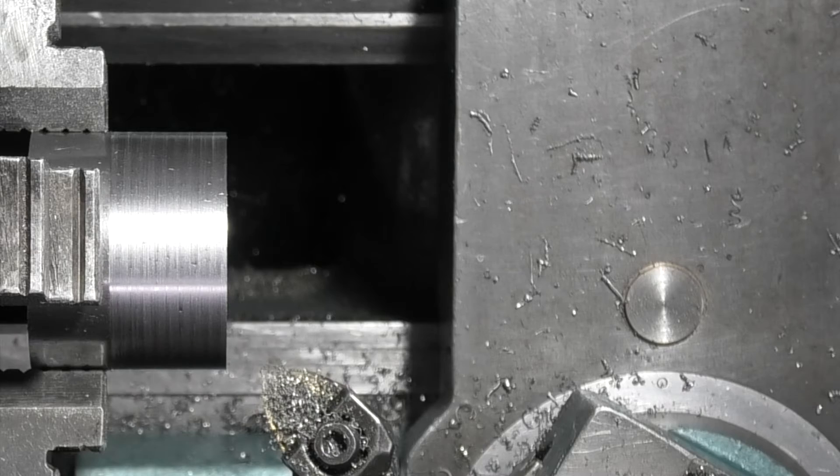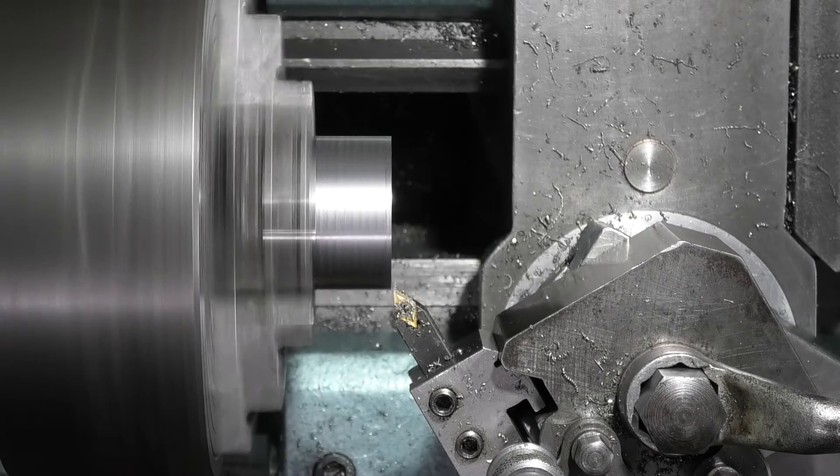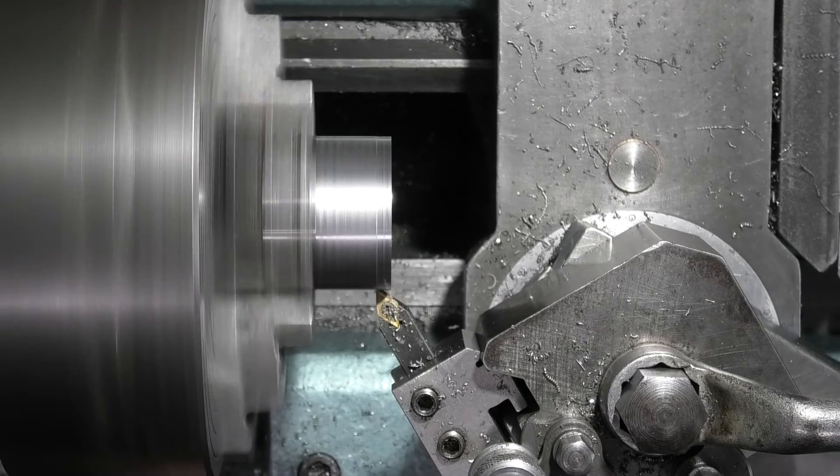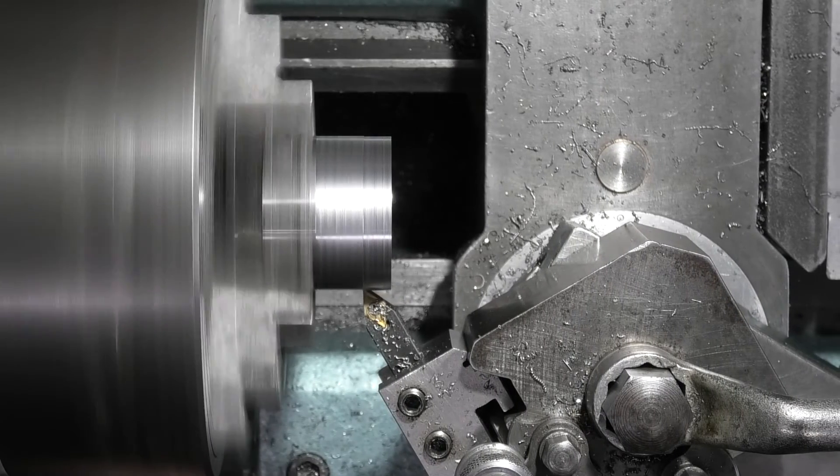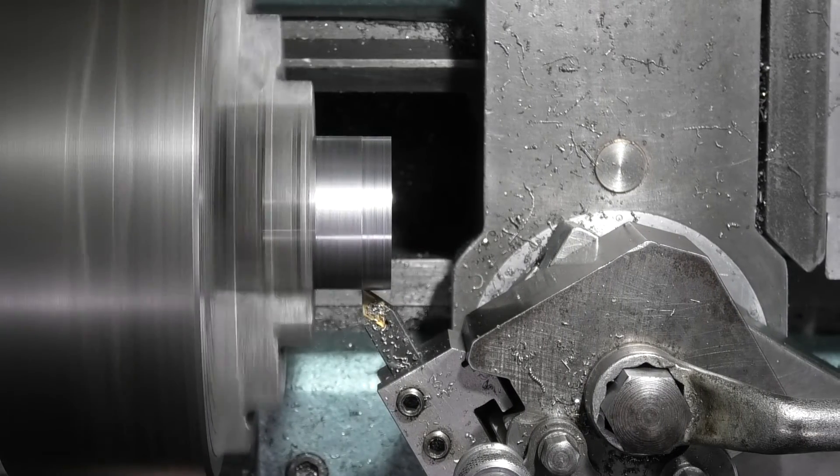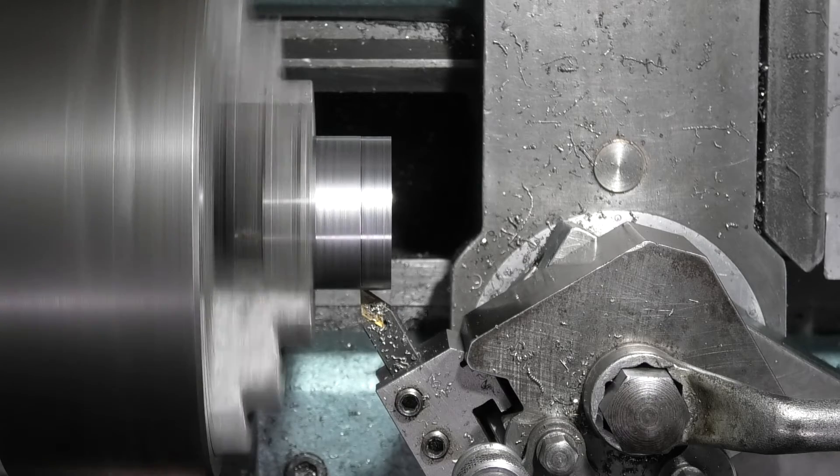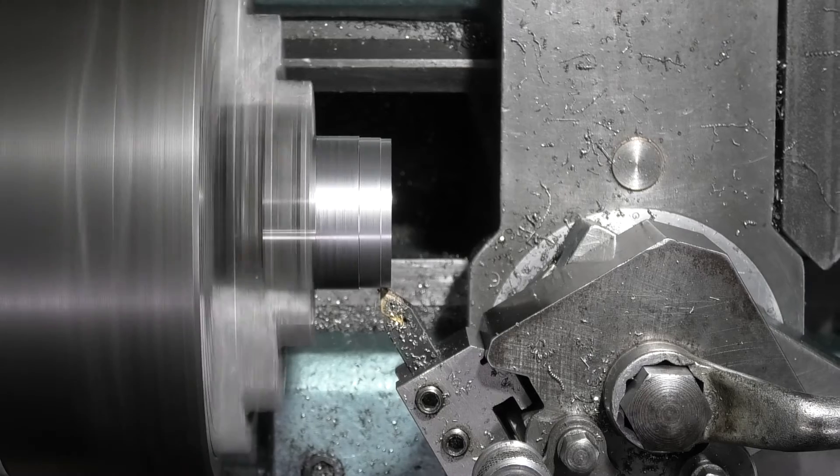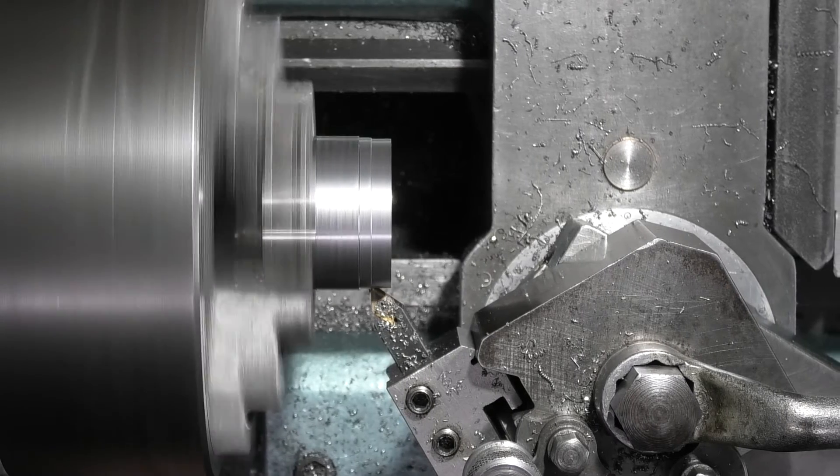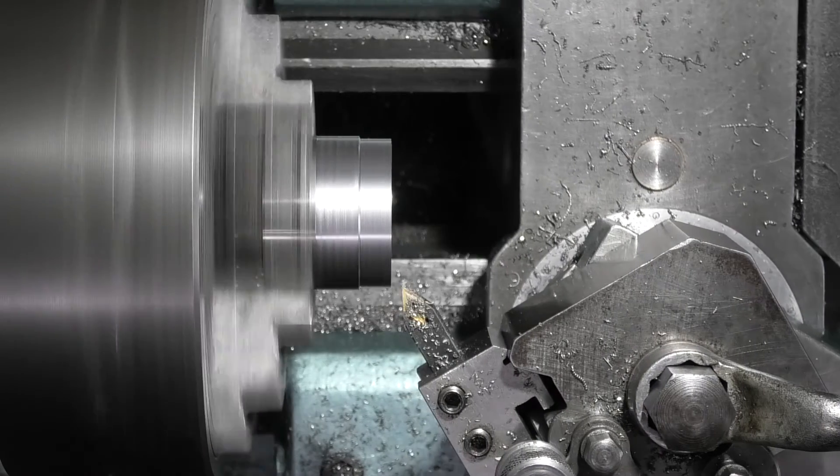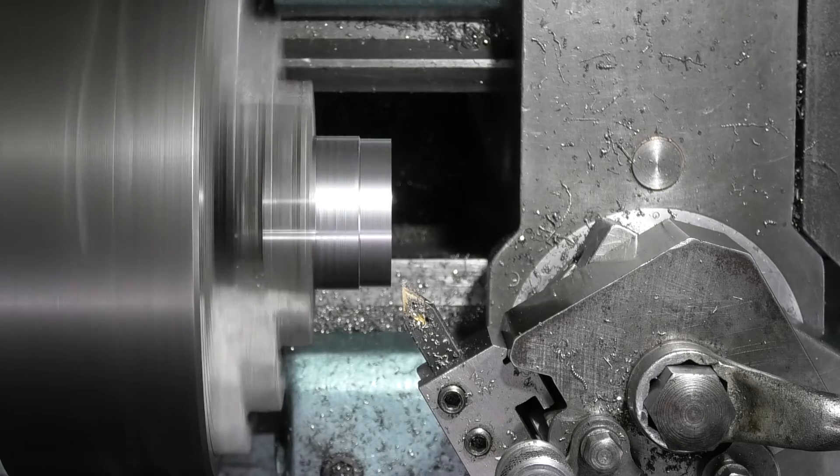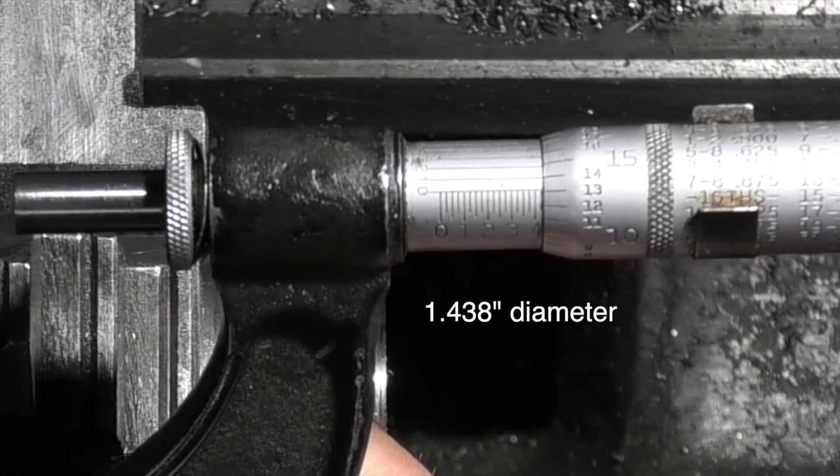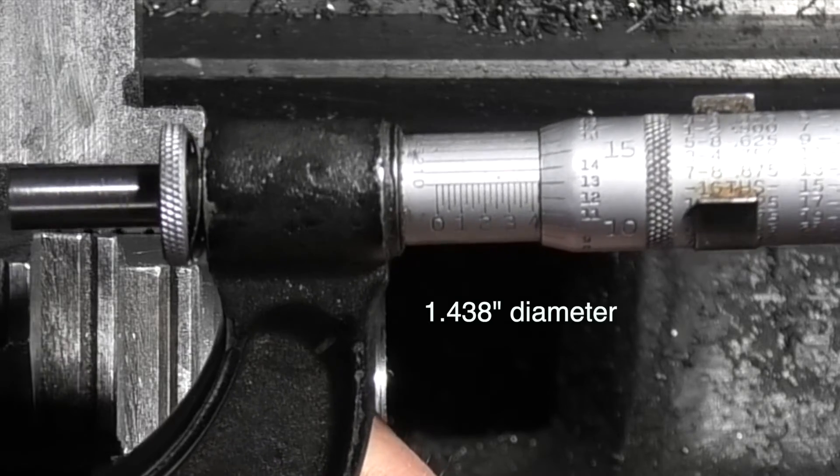I'll change my tool for a smaller tool. Now I need to turn this end down one and seven sixteenths by three eighths long. One point four three eight, one point four three eight two.